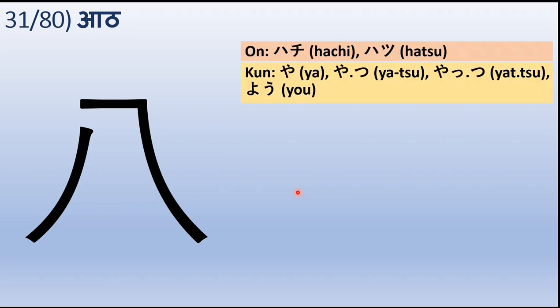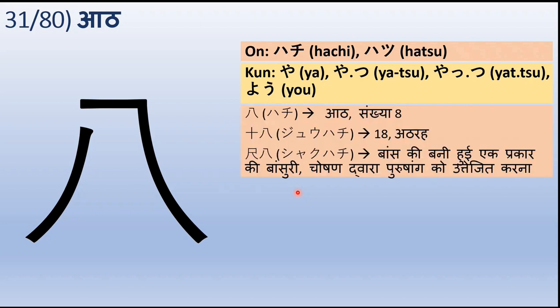Onyomi is called Hachi or Hatsu. Kunyomi is Yatsu or Yattsu, or Yob. This is the usage of Sankhya 8.